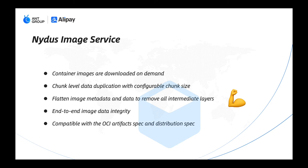For these issues mentioned above, we developed the Nydus image service project. It can read container image data on demand. It also supports chunk-level data deduplication with configurable chunk size. It flattens the container image into a metadata layer and a data layer, removing all intermediate layers. It also supports end-to-end image data integrity validation. Last but not least, it's compatible with the OCI artifact spec and distribution spec, so it can easily integrate into the existing container ecosystem.